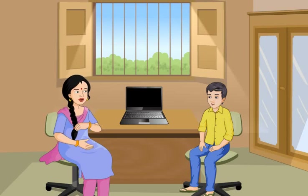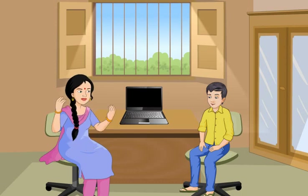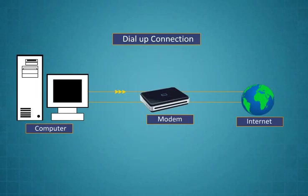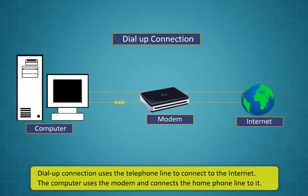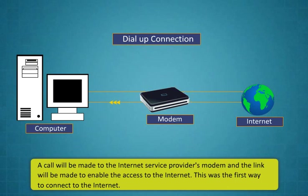How do we get the internet in our computers, Didi? To connect to the internet, you will require some devices and network service providers. These are some of the ways to connect to the internet: Dial-up connection, Integrated Services Digital Network, Direct Internet Access, and Digital Subscriber Line. Dial-up connection uses the telephone line to connect to the internet. The computer uses the modem and connects the home phone line to it. A call will be made to the internet service provider's modem and the link will be made to enable access to the internet. This was the first way to connect to the internet.